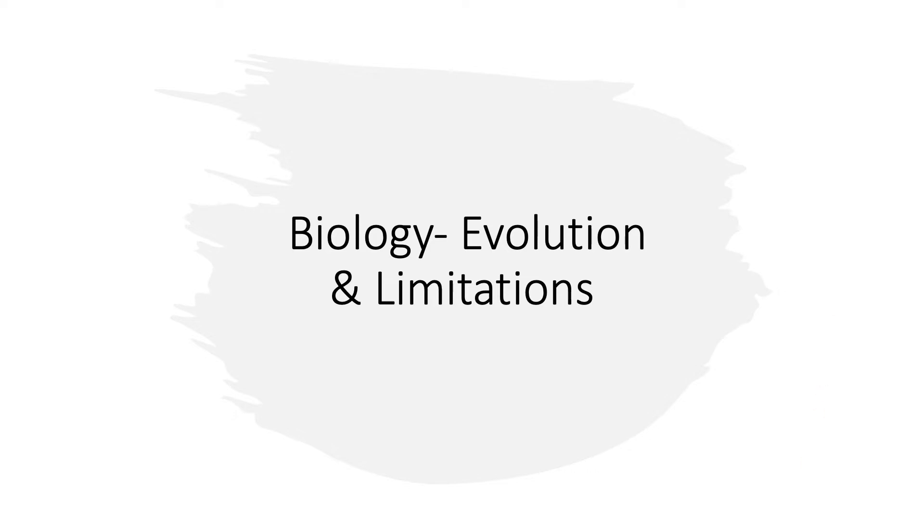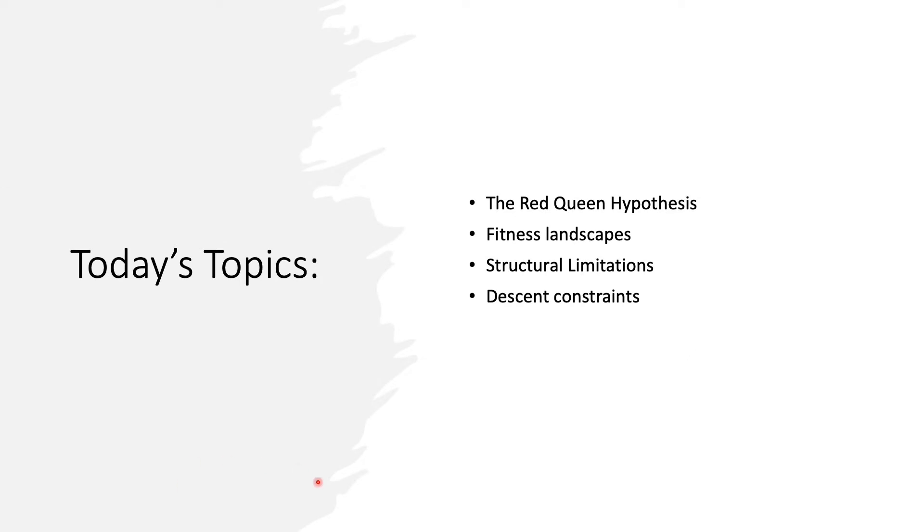Let's jump into the topics for today. We're going to be looking at different aspects or lenses to address this question. We're going to look at the Red Queen Hypothesis, local adaptive peaks or fitness landscapes, structural limitations, and how descent plays a role in evolution and how it constrains organisms.